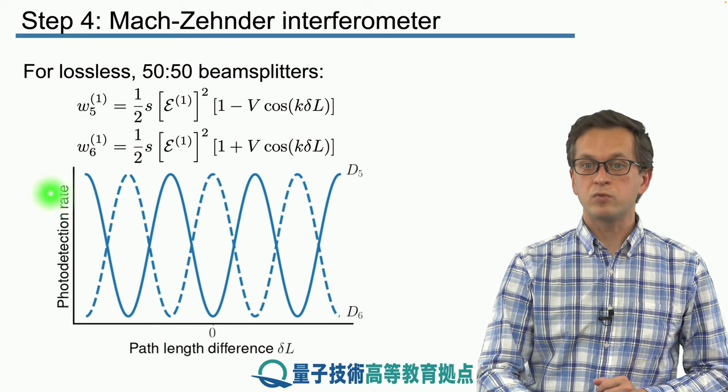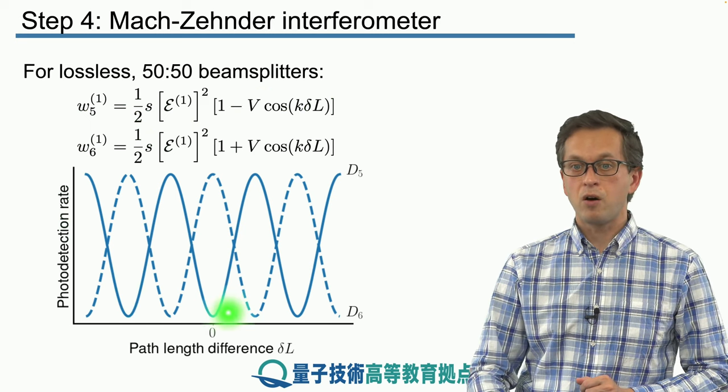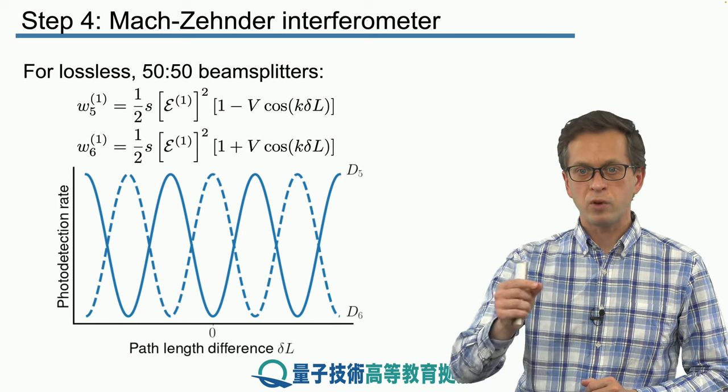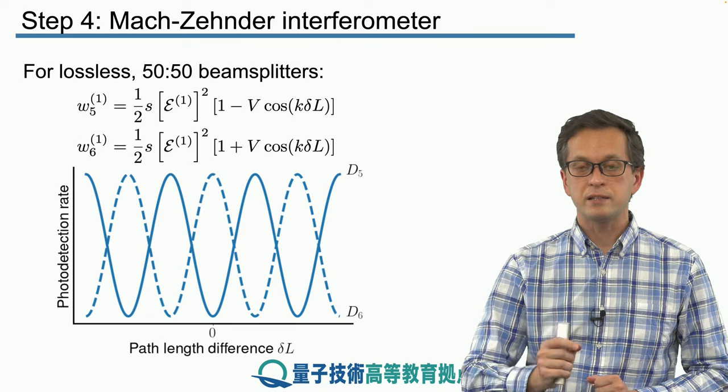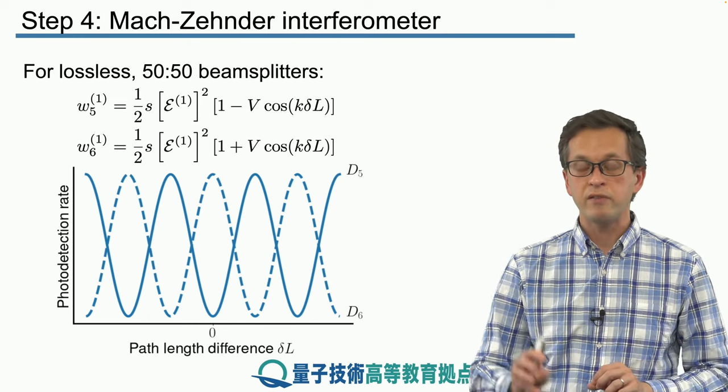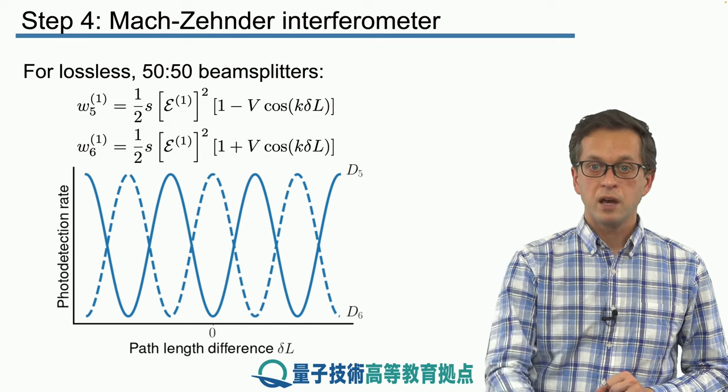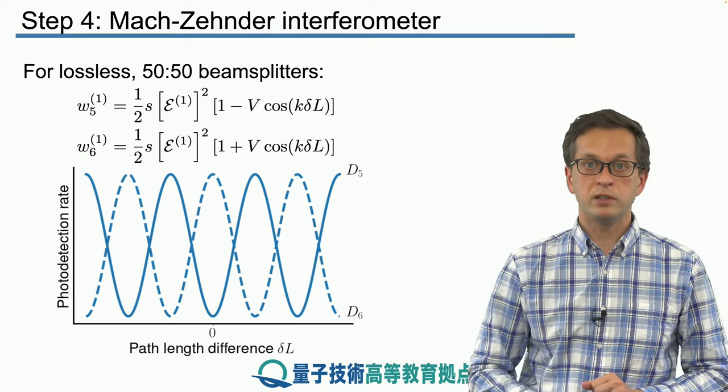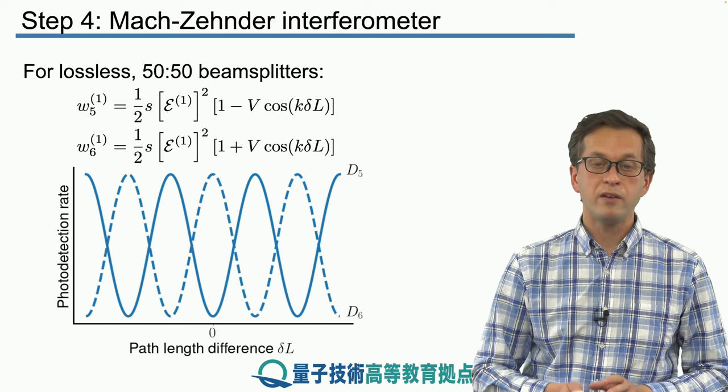And here is what we actually see. On the x-axis we are plotting the path length difference δL. So we are moving the mirror M3 and seeing how it affects the probabilities of the photon being detected at D5 or at D6. And on the y-axis we are plotting the photo detection rate, so W1 of 5 and W1 of 6.